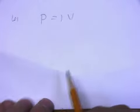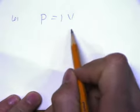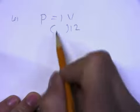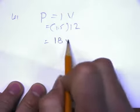So I think I'm going to go P equals IV. And they tell me that the voltage is 12 and the current is 1.5. So I take 1.5 times 12, I get 18 watts.